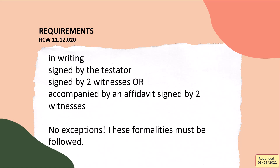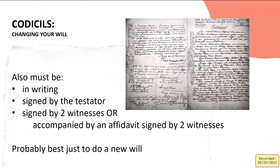A codicil — amending your will — requires all the same formalities: in writing, signed by the testator and two witnesses, or with an affidavit. I always say it's probably best just to do a new will so that any changes are consistent with your overall estate plan. It doesn't really tend to be cheaper to just add an amendment unless the change is really minor.